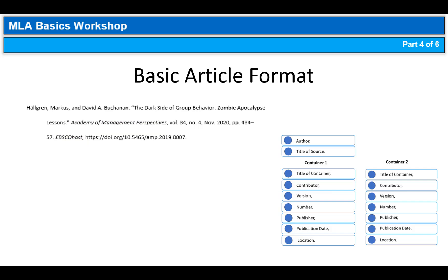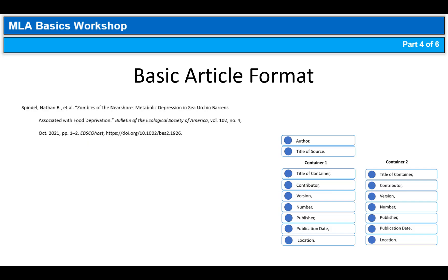Now we move on to an article with more than two authors: Spindle, Nathan B., et al. The title of the article is in quotation marks with the period inside the quotes. For container 1, the elements are the journal title in italics, followed by the volume, comma, issue, comma, publication date, comma, and page range, period. For container 2, the elements are the database in italics, comma, DOI, period.